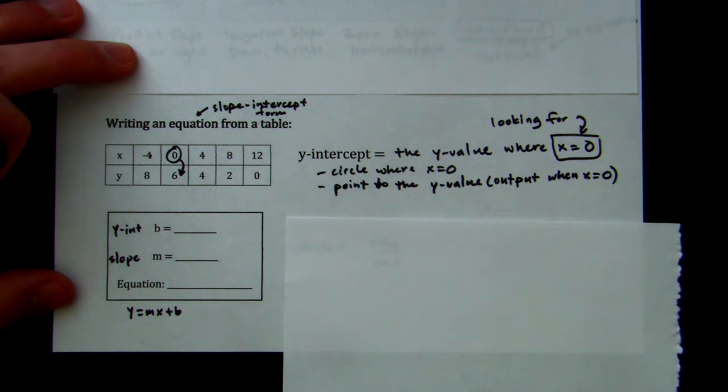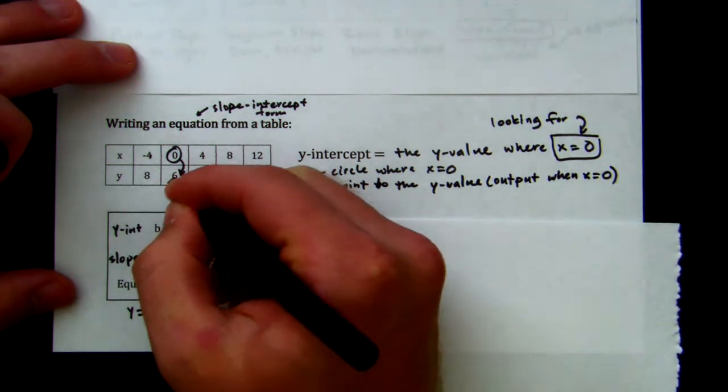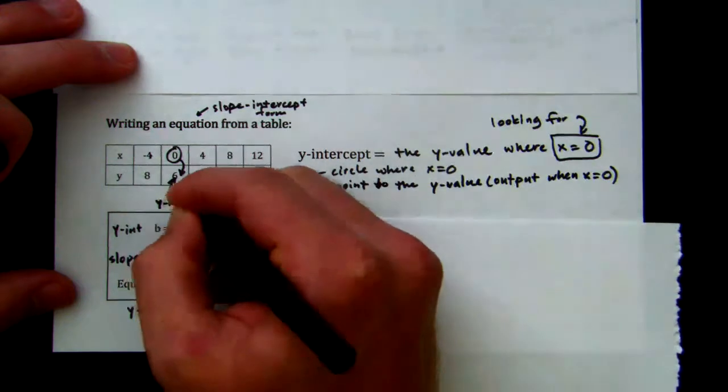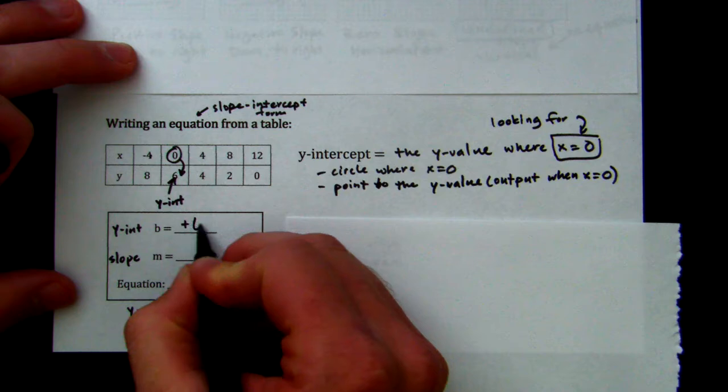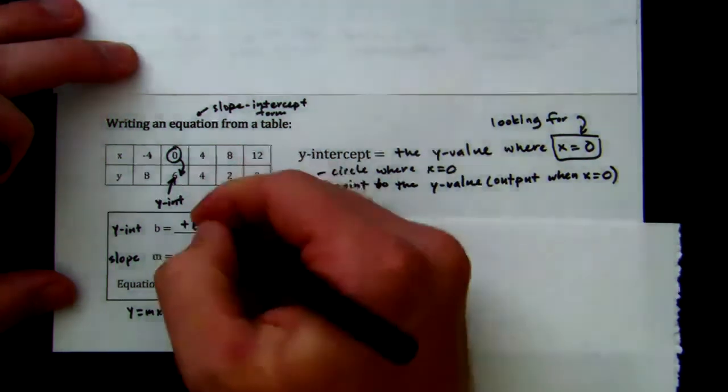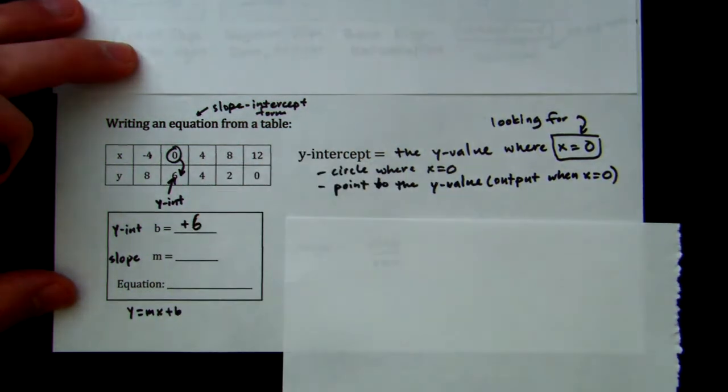And what that tells me is that this number right here is the y-intercept. It's a positive 6. So my b, which is the y-intercept, is plus 6. That is not a letter b, that is a 6. I apologize. Plus 6 is my y-intercept.